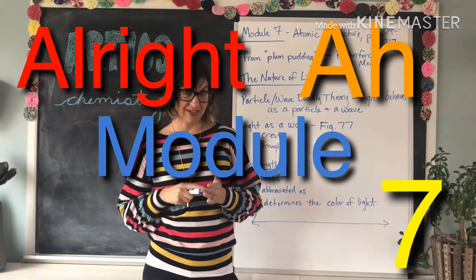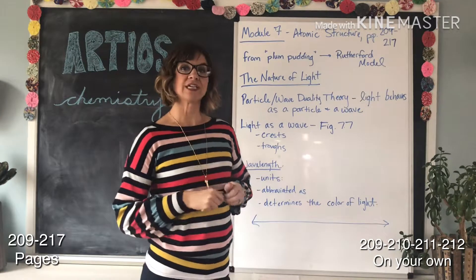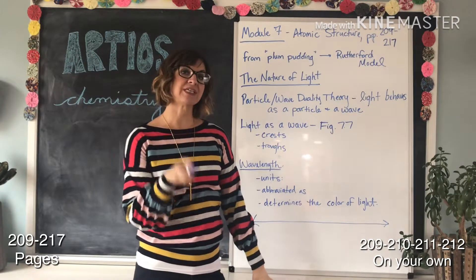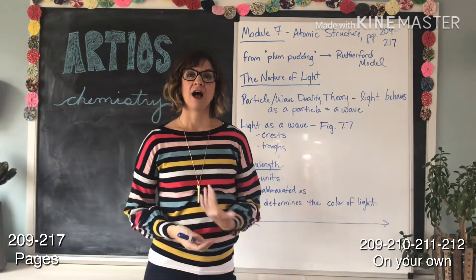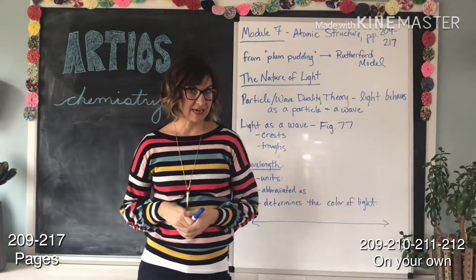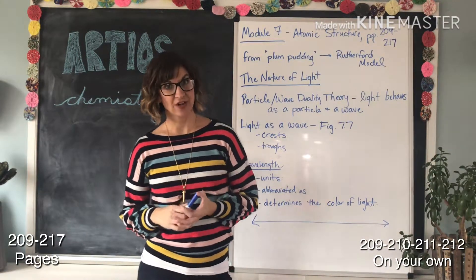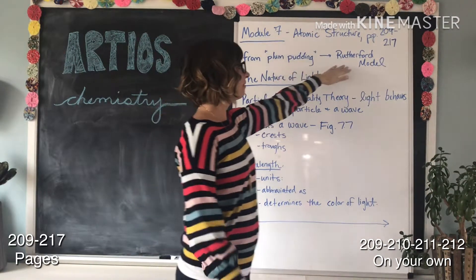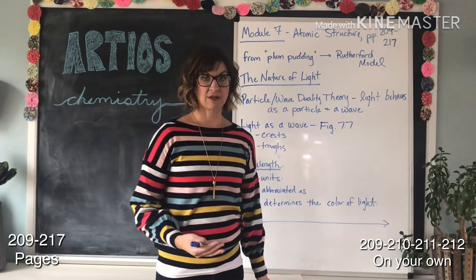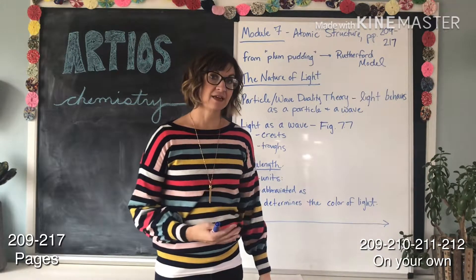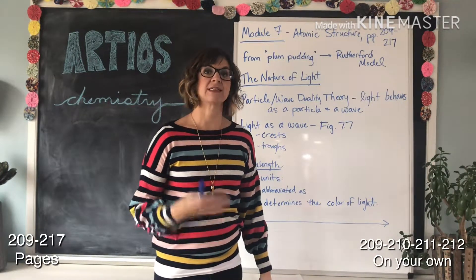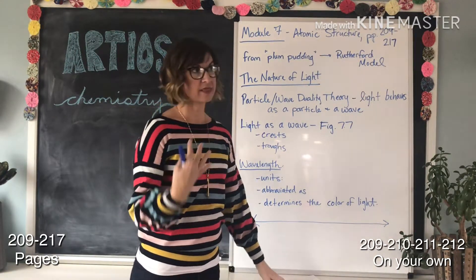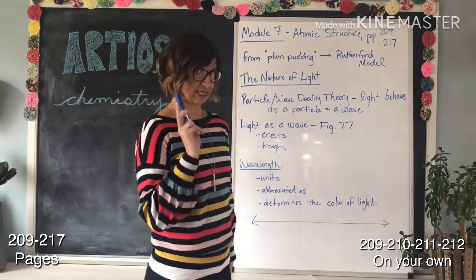Module 7, video 7b. We are looking at pages 209 through 217 today. However, the first four pages I want you to read on your own and get a basic understanding of atomic structure and how our understanding of atomic structure has changed historically — from the plum pudding theory to the Rutherford model. Both of these models are outdated. Our current model comes from Niels Bohr, but in order to understand his atomic structure theory, we need to look at light.